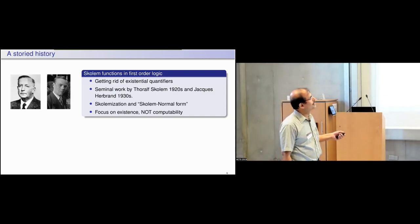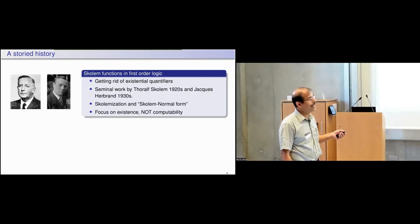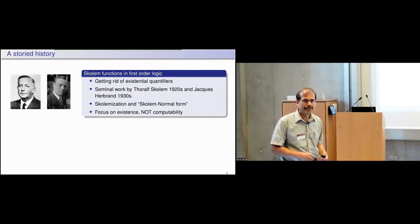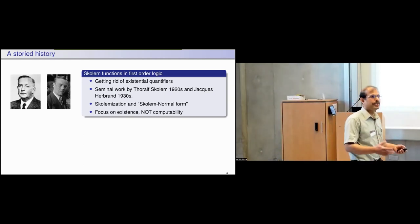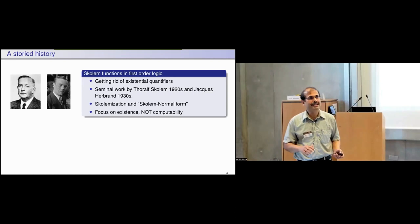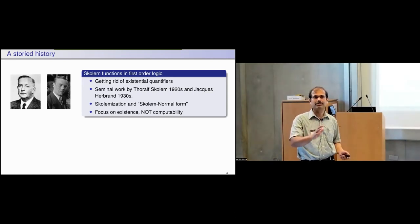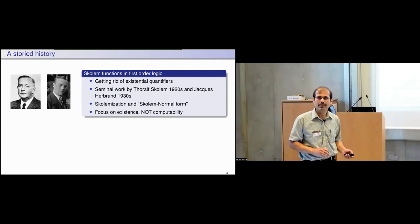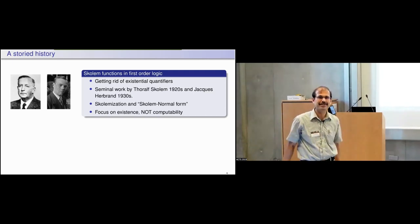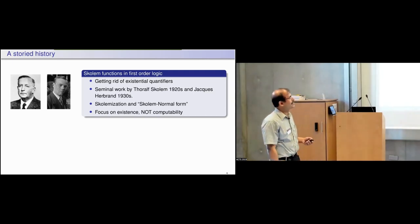Skolem and Herbrand were pioneers here — we have the Löwenheim-Skolem theorems which make use of these Skolem functions, and we have Herbrand's theorem on how to instantiate quantifiers. There is a lot of work done on this, but all of that work really focuses on existence of these functions, not on how to compute them algorithmically.